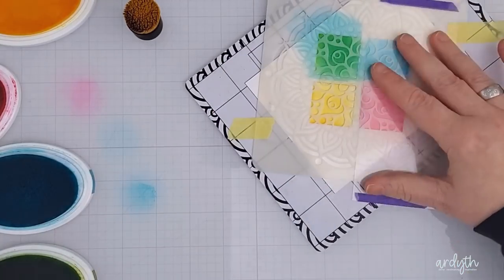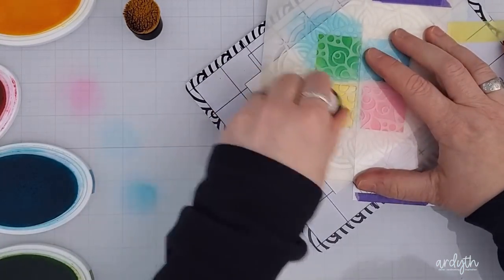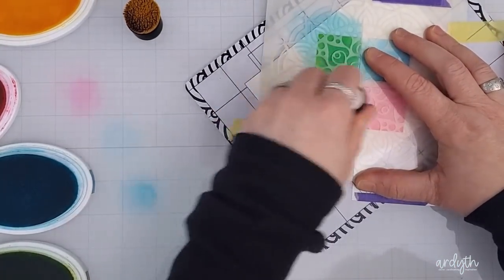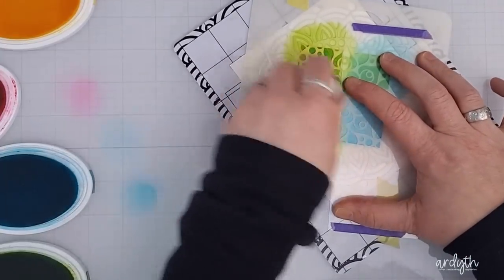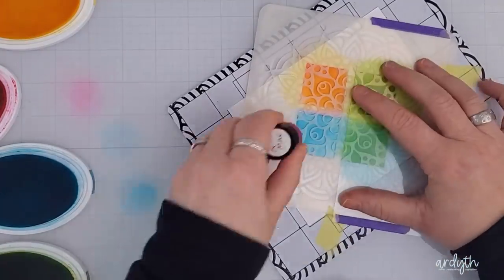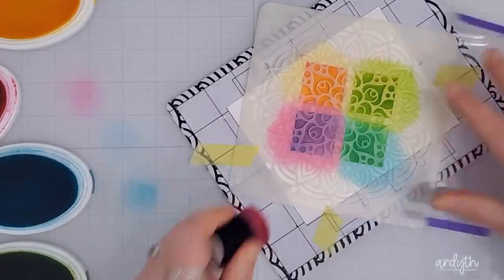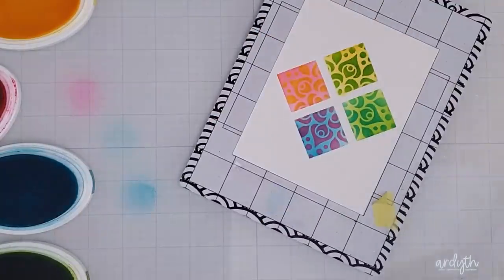Now what I did was I blended the ink that was next to the square through. So the green square got blue on top, the yellow square got green, the pink square got yellow, and then the blue square got pink. Those four blends added four more colors to my color palette and gave the card a whole different look.